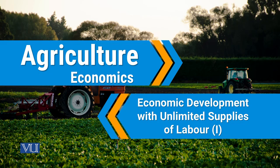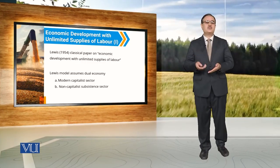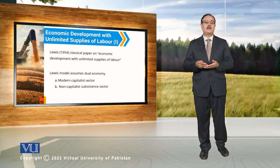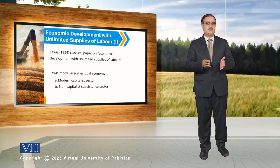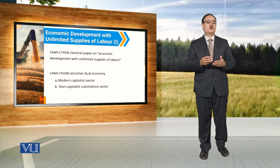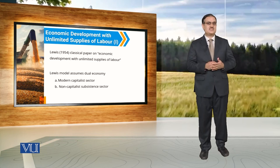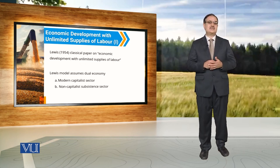We have discussed that there is a conversion of subsistence agriculture into a money economy. Jab yeh conversion hoi from subsistence to money economy, toh isko formalize kiya Lewis na in his classical paper on 'Economic Development with Unlimited Supplies of Labour.' For the development of this economic model, he assumes a dual economy, and in this dual economy there are two types of sectors.